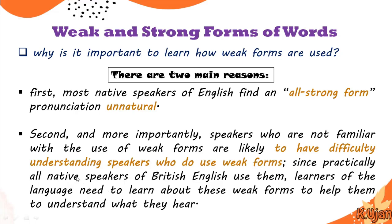Since practically all native speakers of British English use weak forms, learners of the language need to learn about them to help understand what they hear. Those who are not native speakers must understand weak forms because, for the sake of comprehension, we must know about weak forms. This is another reason for learning them.